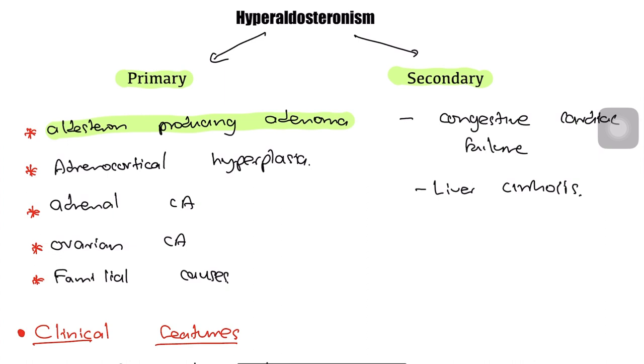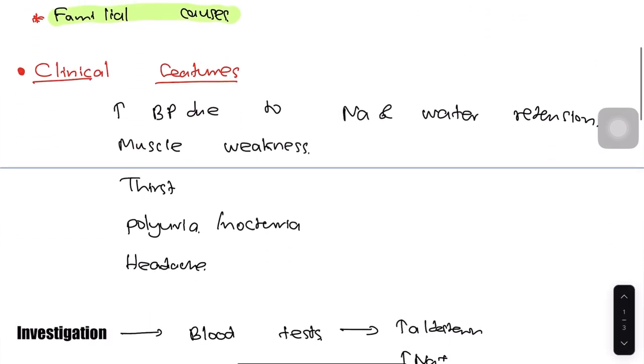Very rarely, adrenocortical hyperplasia, adrenal carcinoma, ovarian carcinoma, and familial causes can occur. Secondary hyperaldosteronism is usually caused by congestive cardiac failure and liver cirrhosis. Let's talk about the clinical features of hyperaldosteronism.